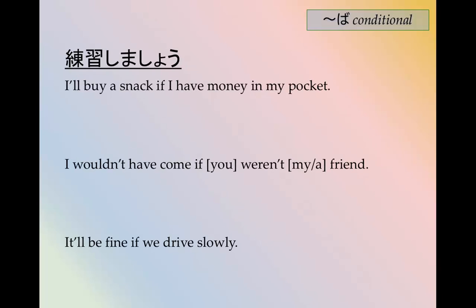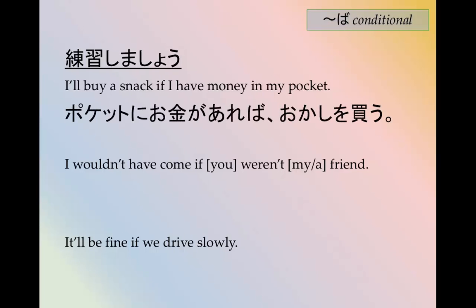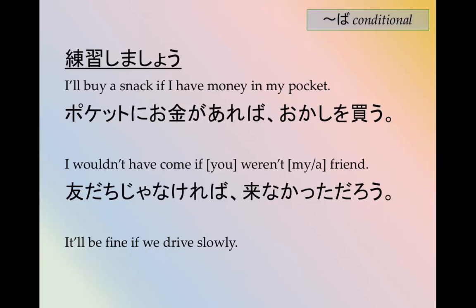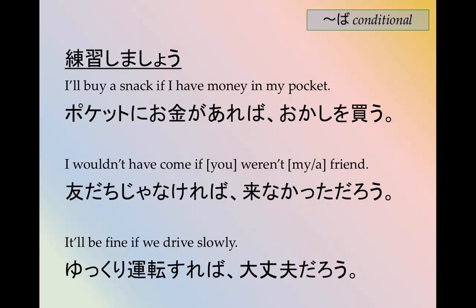Let's practice. How would you say these in the ば form? ポケットにお金があれば、お菓子を買います. 友達じゃなければ、来なかっただろう — this is counterfactual, so it uses だろう at the end. ゆっくり運転すれば、大丈夫だろう — it will probably be fine if you drive slowly.